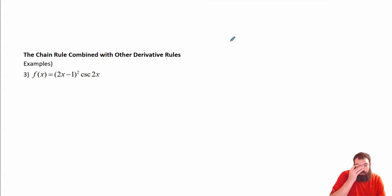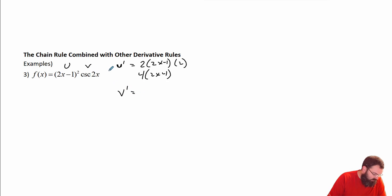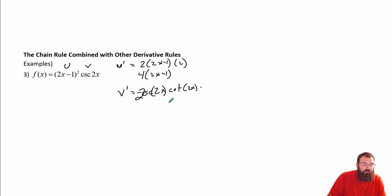Let's do some trig here. We did this in the last section but we want to refresh our brains. So this is product rule — uv. So u prime is going to be 2 times (2x minus 1) to the first times 2, which is 4 times (2x minus 1). And then v prime — cosecant derivative is negative cosecant cotangent — so negative cosecant of 2x times cotangent of 2x times 2, so that's really negative 2 out front.